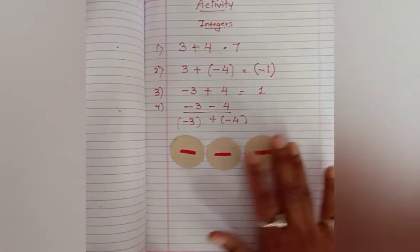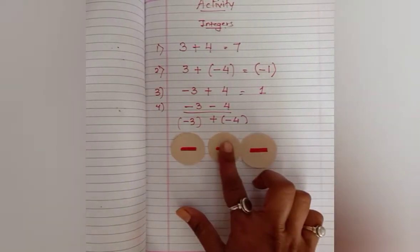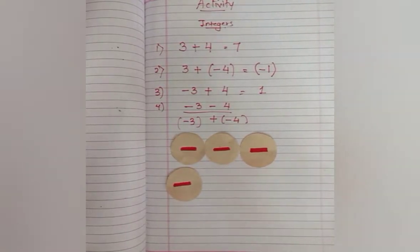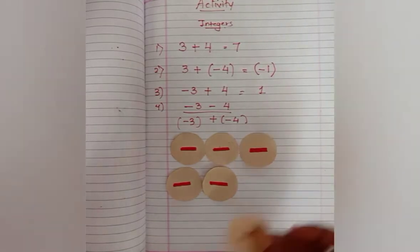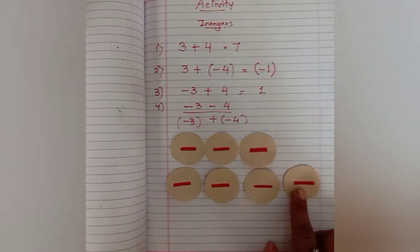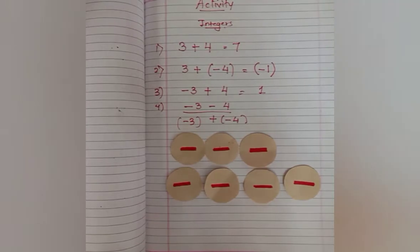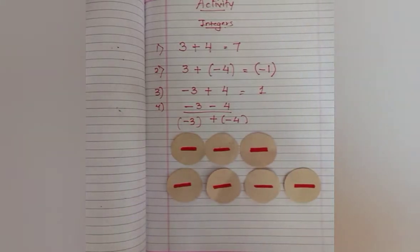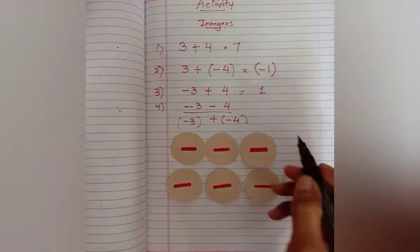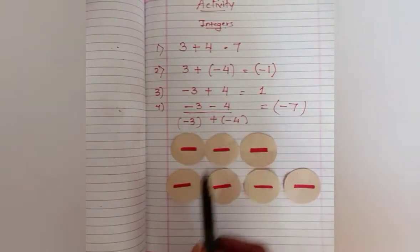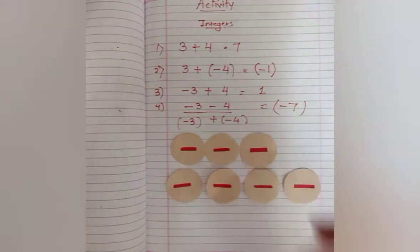So minus three: one, two, three negatives kept here. Next, four is negative, so four more negative circles: one, two, three, four. Now you can see there is no plus-minus pair to neutralize. Simply count all the circles: one, two, three, four, five, six, seven, and the sign is minus. So our answer is minus seven.